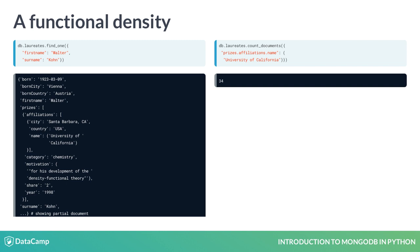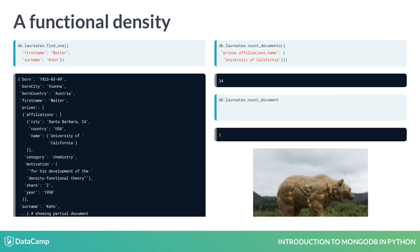I'm curious how many laureates had an affiliation in Berkeley, California when they received a prize. Here's my query.